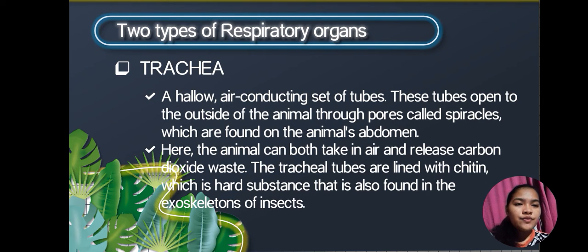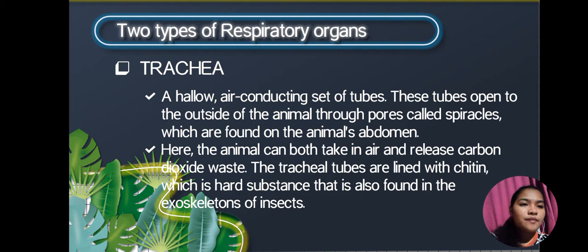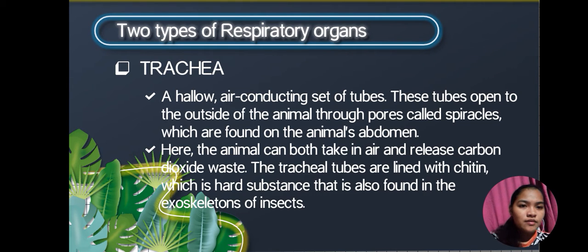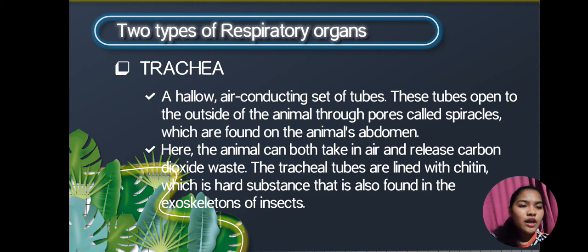Another type of respiratory organ is the trachea — a hollow air-conducting system of tubes. These tubes open to the outside of the animal through pores called spiracles, which are found on the animal's abdomen. Here the animal can both take in air and release carbon dioxide waste. The tracheal tubes are lined with chitin, a hard substance also found in the exoskeletons of insects.